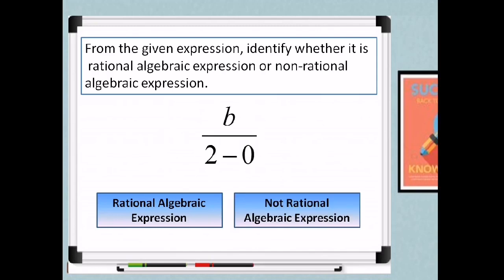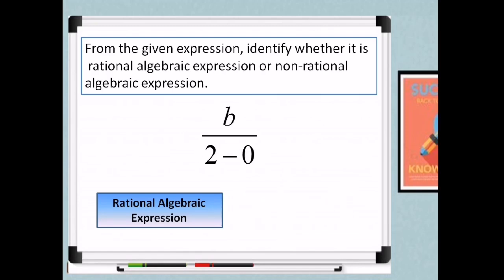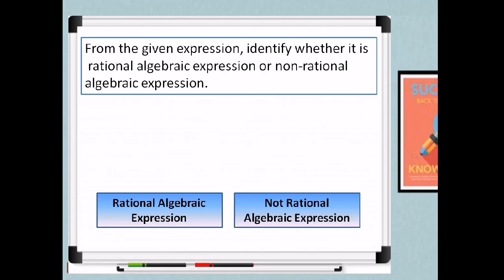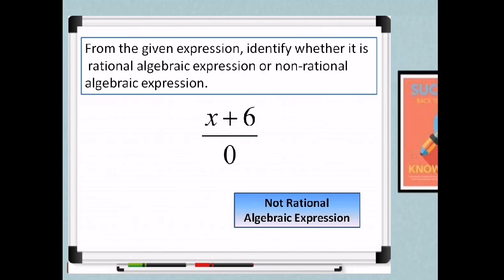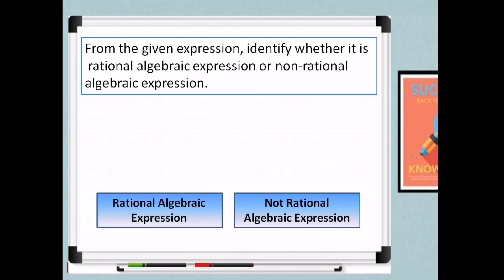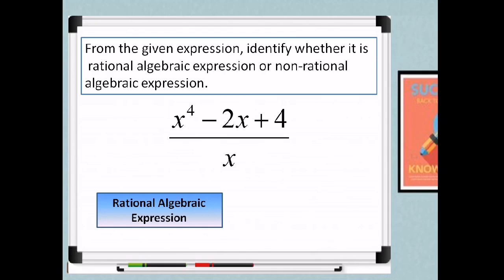How about b over 2 minus 0? That is a rational algebraic expression. And x plus 6 over 0 — that is not a rational algebraic expression. For our last expression: x to the 4th minus 2x plus 4, over x — that is a rational algebraic expression. You did great with our activity!